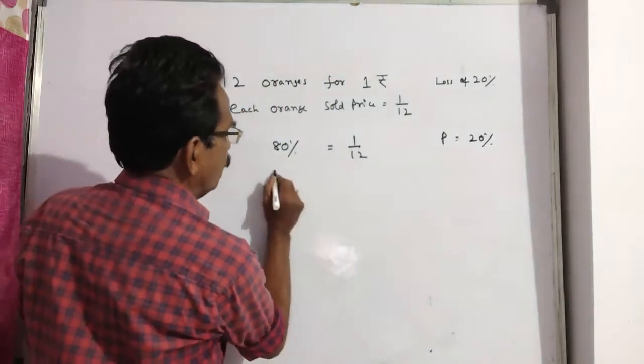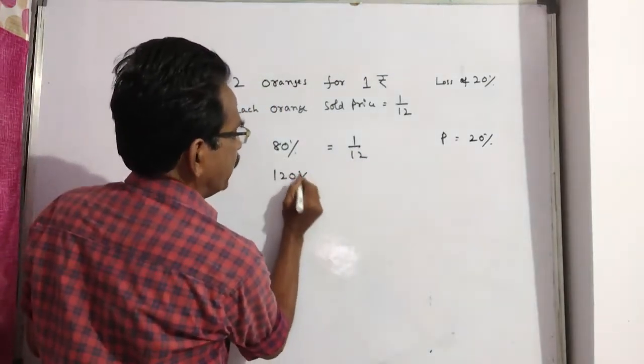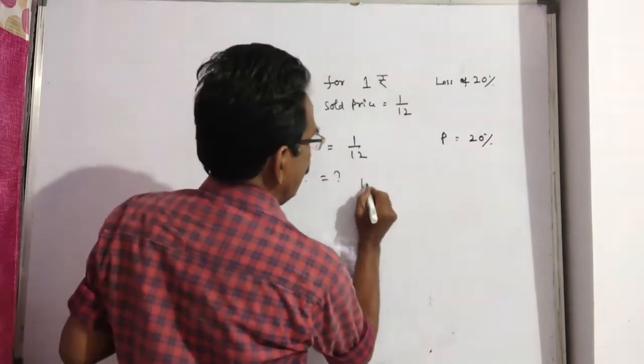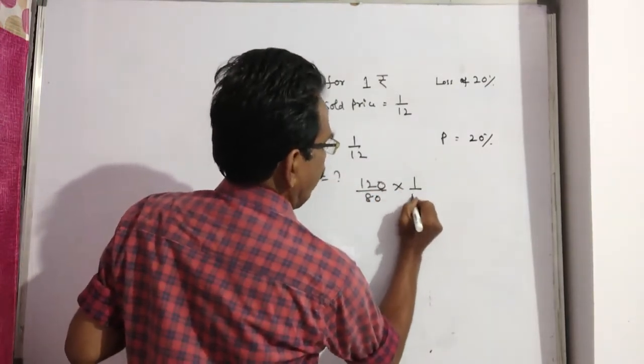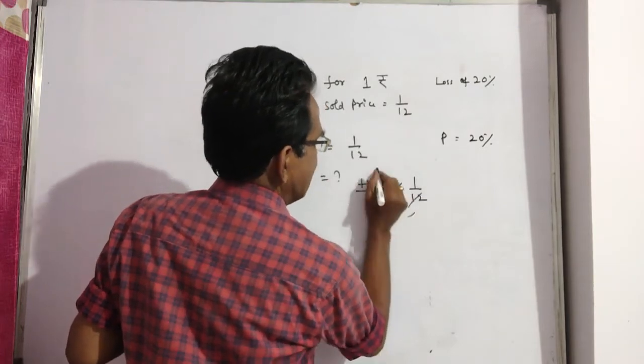If 80% is equal to 1 by 12, what is 120%? 120 by 80 into 1 by 12, 12 tenths.